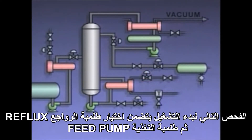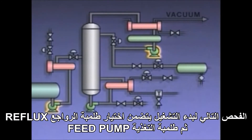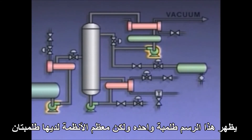The next pre-startup checks involve selecting a reflux pump and then a feed pump, following the same basic procedures that were used with the reboiler pump. As before, this diagram only shows one of each pump; most systems have two of each.